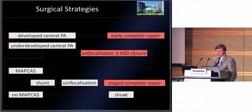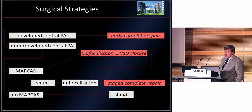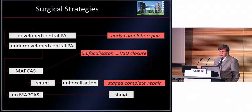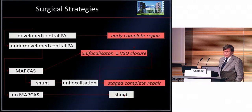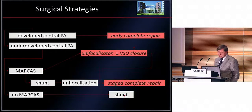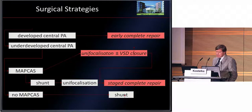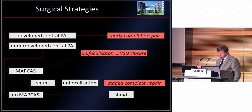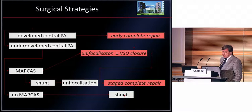So, in summary: developed central artery — early complete repair. Underdeveloped central pulmonary artery — always shunt. If it is a MAPCA — unifocalize and shunt, and wait through many steps. You rehabilitate and re-recruit the pulmonary arteries. That is the only way to achieve a successful biventricular repair.